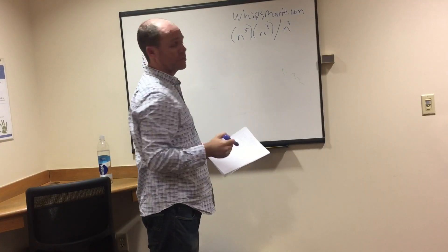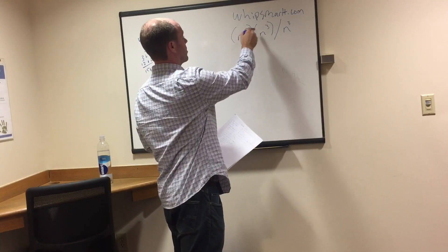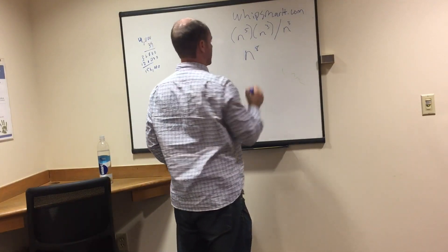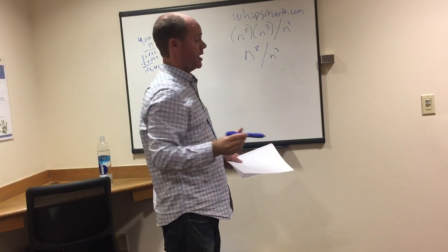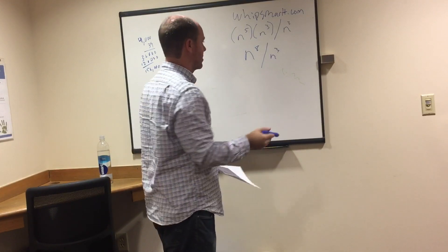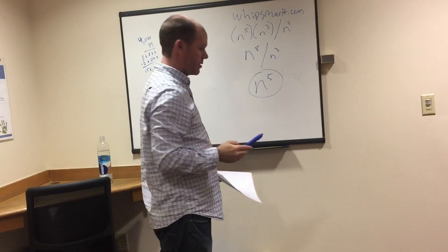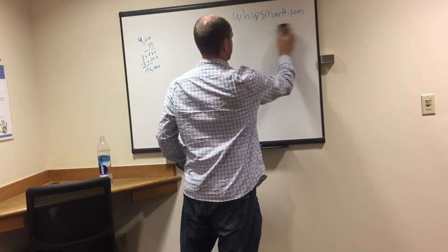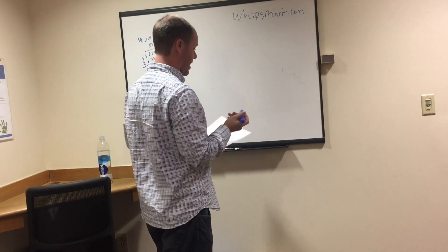All we have to really know is the rules for doing a problem like this. We're multiplying exponents with the same base — it's not like two different bases — so all we do is add these exponents: five plus three is eight, giving us n to the eighth. Then divided by n to the third: when dividing exponents with the same base, subtract the exponents. Eight minus three is five, so n to the fifth is our answer.